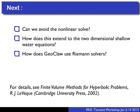Can we avoid doing this nonlinear solve? We don't want to do a bunch of nonlinear solves at every single cell interface in 2D. The answer is yes — that's what I'll talk about tomorrow with approximate Riemann solvers. How does this extend to 2D? I gave a nice theory for 1D, but what does GEOCLAW do in 2D? That's what I'll address tomorrow.